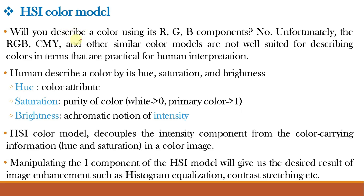The next important color model is the HSI model. RGB, CMY, and similar models are not well suited for describing colors in terms practical for human interpretation. For example, we don't describe an automobile's color by percentages of primaries. When humans view a color object, we describe it by its hue, saturation, and brightness. Hue is the color attribute, saturation is the purity of color, and brightness is the achromatic notion of intensity. The HSI model decouples intensity from the color-carrying information — hue and saturation.